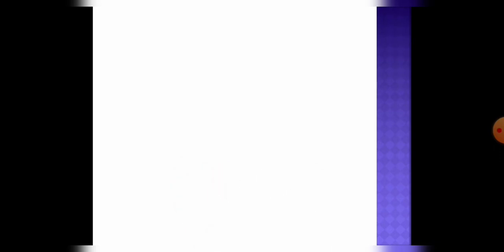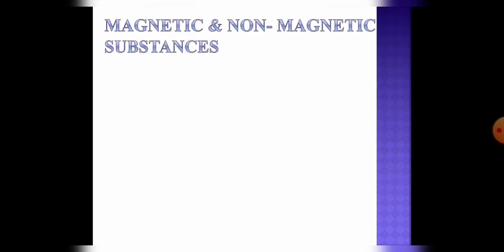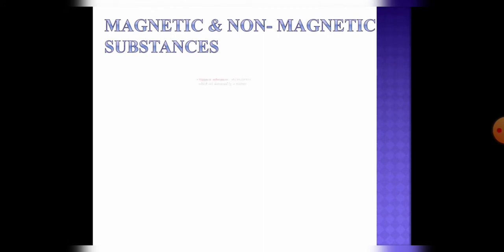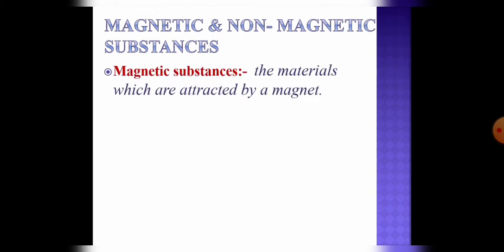Today we will talk about magnetic and non-magnetic materials. So very first, what are magnetic substances? The materials which are attracted by magnets are called magnetic substances.